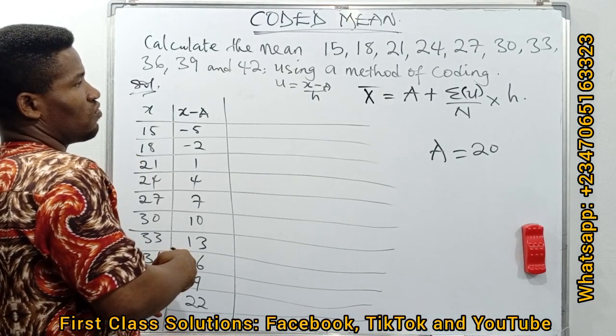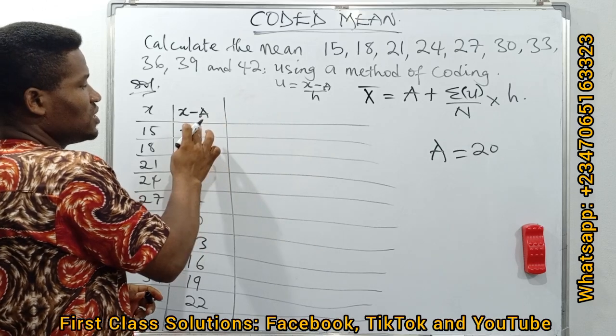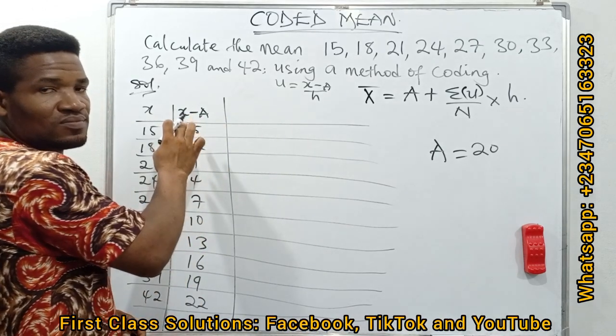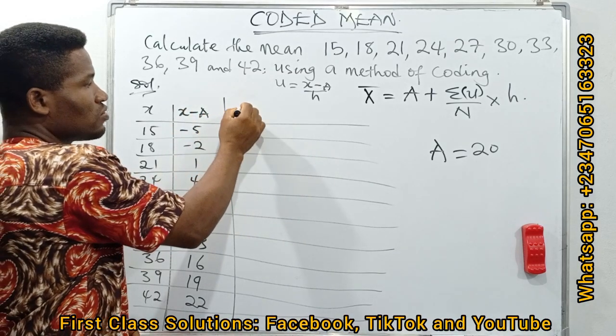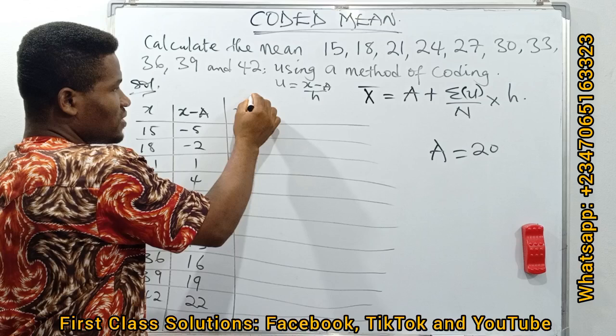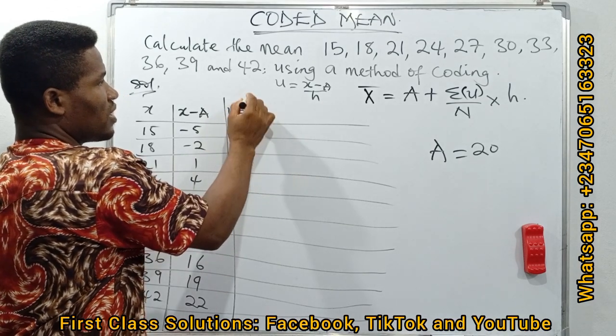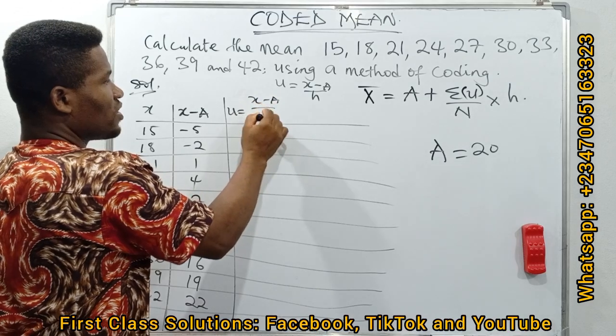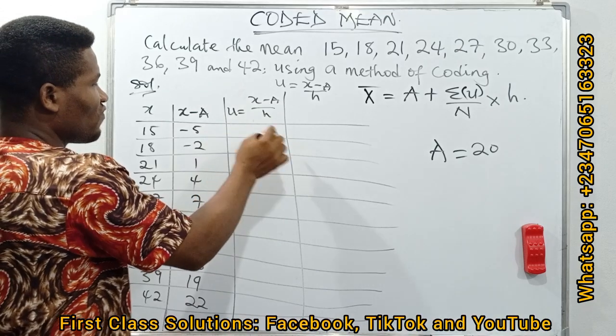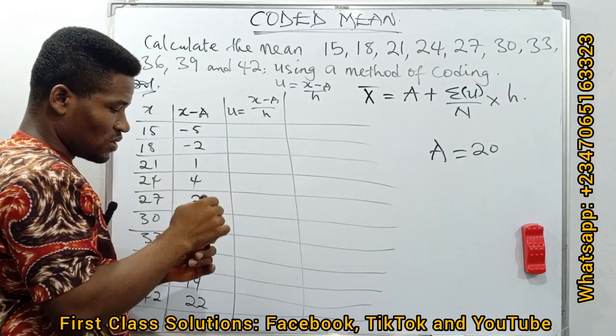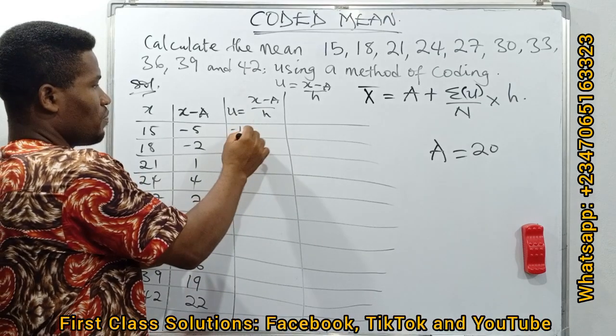If we need to get the coding factor, we need to have these values all divided by 3. We have these values divided by 3 because this is already our X minus A. So we have our U here: U equals X minus A over H. We just have to divide these by 3. Minus 5 over 3 will give us minus 1.67.